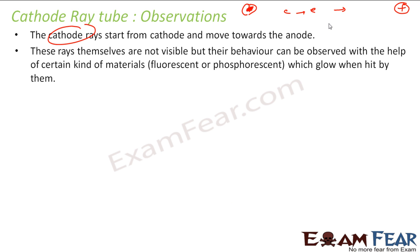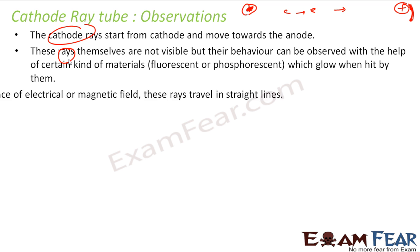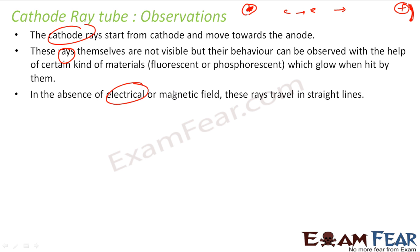The rays are not visible, but when they strike the fluorescent material — the phosphorus coating placed there — it glows. So the ray is not visible, but you can detect it by making sure that the ray hits the fluorescent membrane. In the absence of any electrical or magnetic field, they travel in straight lines — that's what he observed.